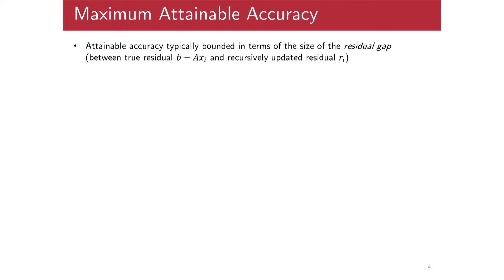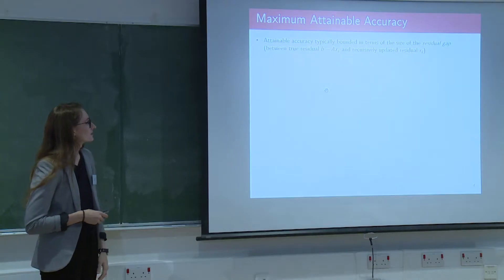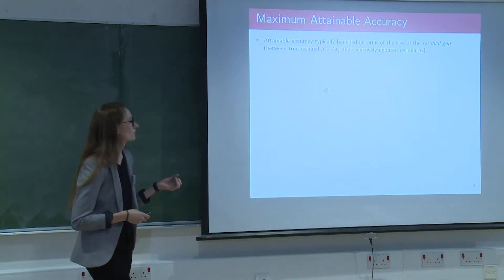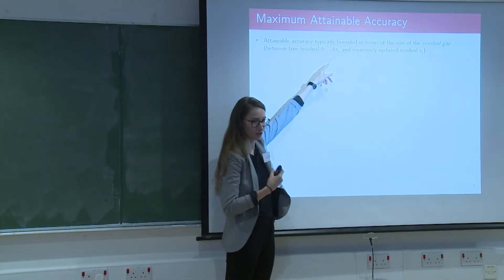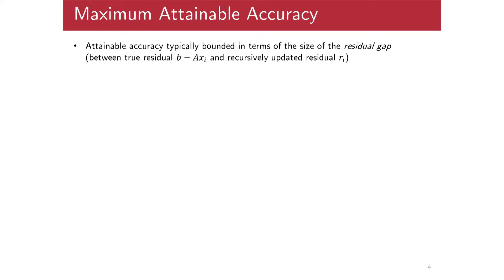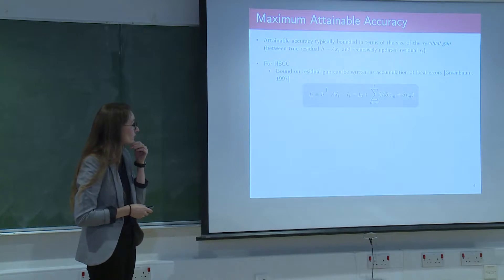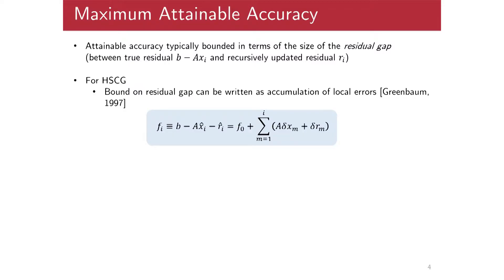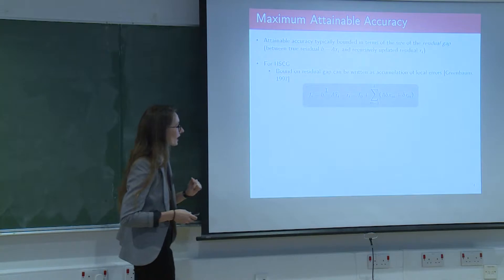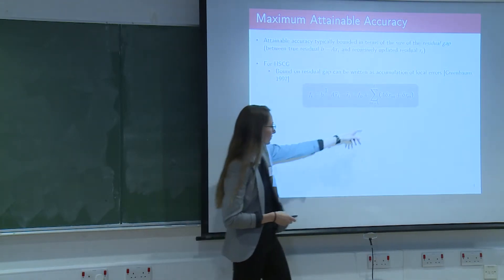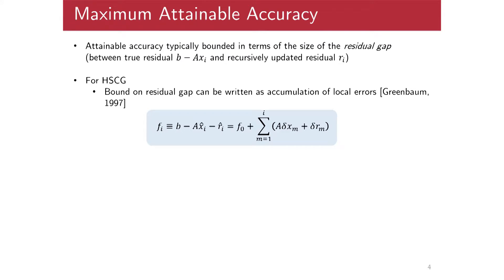So I'll talk about this in terms of maximum attainable accuracy of the methods, and so without going into details, I'll just say that the attainable accuracy here is typically bounded in terms of the size of the gap between the two residuals. So the true residual B minus AX, where this X has, you know, some rounding errors that have been accumulated there, and this recursively updated residual, which is also independently of X accumulating rounding errors. Okay, so it was shown by Anne Greenbaum in a paper in 1997 that for CG and other recursively updated residual methods, that the bound on the residual gap here can be written as essentially just an accumulation of local rounding errors. All right, so using this F to stand for my residual gap, so the residual gap in iteration I will be whatever my initial gap was, plus a summation of local rounding errors, where this delta X is the error I make in updating X, and the delta R is what I make in updating R.